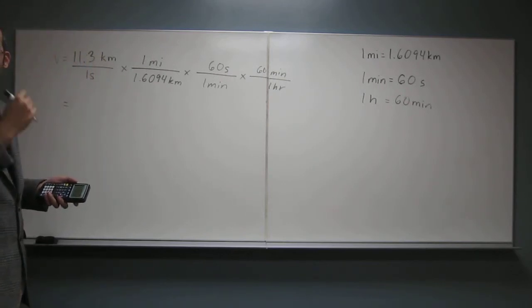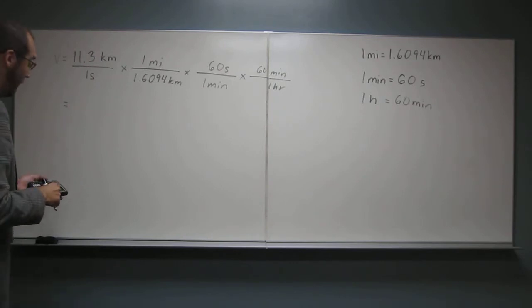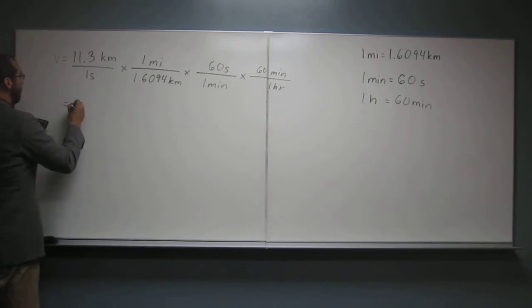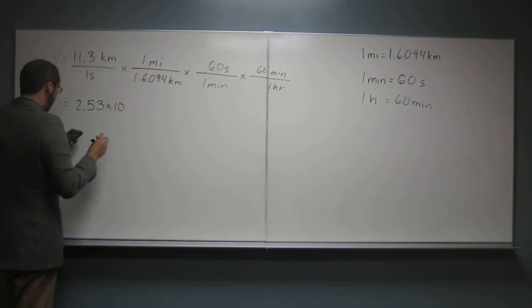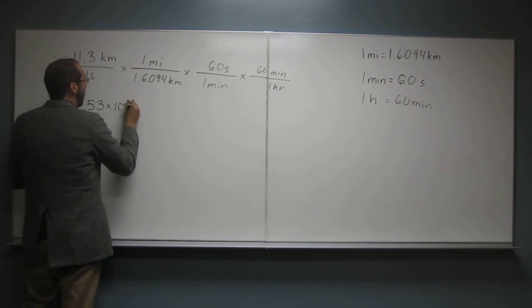So we got to make sure we put this into what? Scientific notation. Scientific notation, right? So 2.53 times 10 to the 1, 2, 3, 4, right? 4.